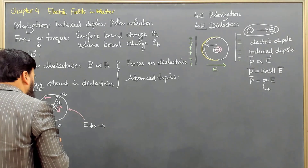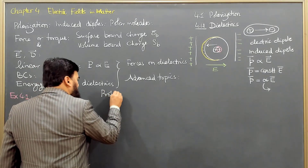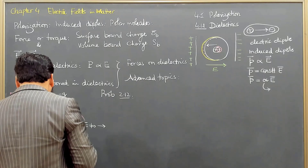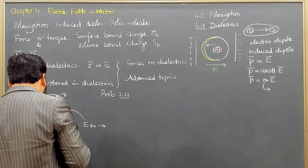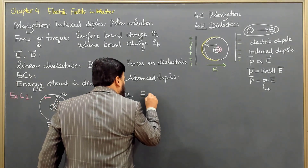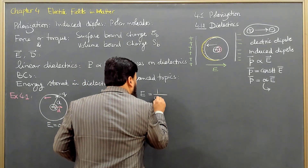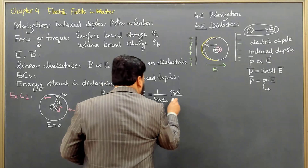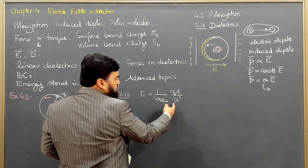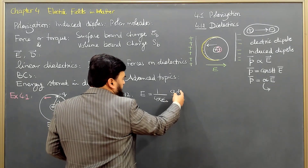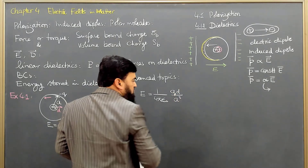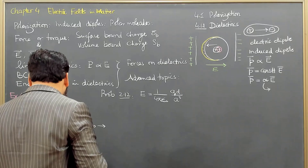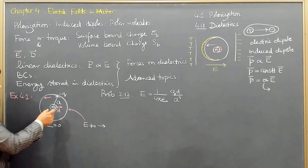...as solved in Problem 2.12, the field at a distance d from the center of a uniformly charged sphere is E = (1/4πε₀) × (qd/a³). Dimensionally this is fine because q over r² is the electric field, d is the length, and a³ appears in the denominator.